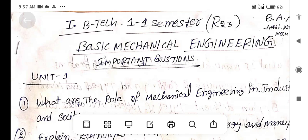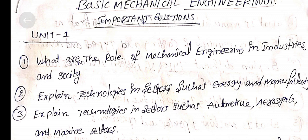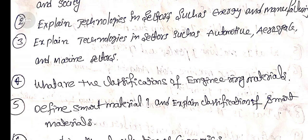Basic Civil and Mechanical Engineering subject — Mechanical Engineering unit-wise important questions list. Unit 1: Question 1: What are the roles of mechanical engineering in industries and society? Question 2: Explain technologies in sectors such as energy and manufacturing. Question 3: Explain the technologies in sectors such as automotive, aerospace, and marine sectors.